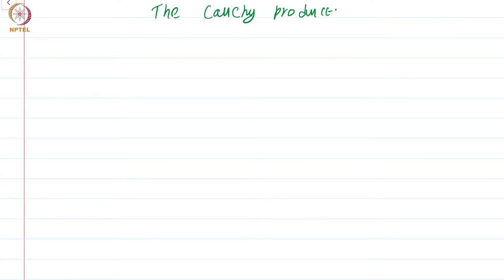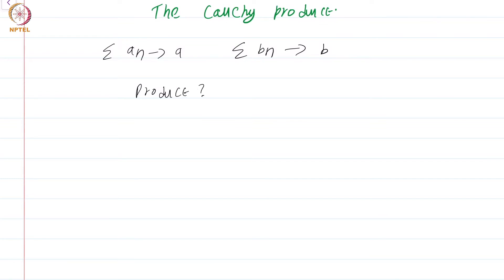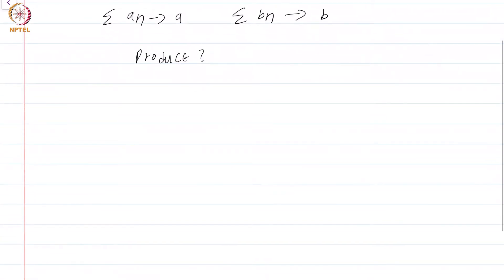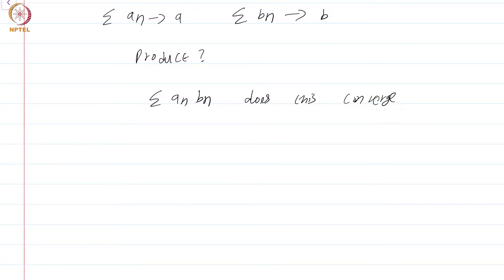Suppose we are given two series summation aₙ and summation bₙ, where summation aₙ converges to a and summation bₙ converges to b. When does it make sense to take the product? Is there a natural product on this? Naively, you would think we can consider the product summation aₙbₙ. But does this always converge? Let us take an example.